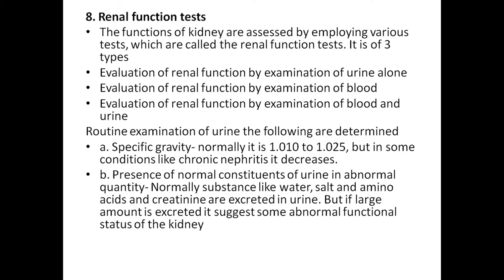The eighth question is renal function tests. The function of the kidney is assessed by employing various tests called renal function tests. It is of three types: evaluation of renal function by examination of urine, evaluation of renal function by examination of blood, and evaluation of renal function by examination of both blood and urine. For urine examination, specific gravity is determined — normally it is between 1.010 to 1.025, but in conditions like chronic nephritis it decreases. Presence of normal constituents of urine in abnormal quantities is also assessed.